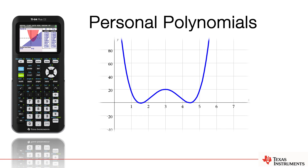Welcome to this session titled Personal Polynomials for the TI-84 Plus CE Calculator. This is very much a recreational sort of mathematical thing to do. It doesn't have any real bearing on the real world, but it's just a bit of fun. The idea is you develop a polynomial that aligns to your name — it's kind of like a DNA or fingerprint of your own name, but represented mathematically.